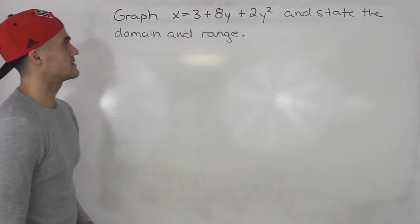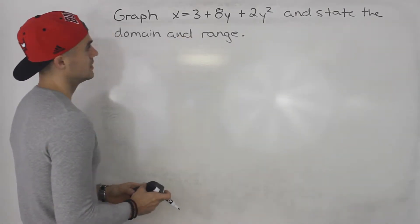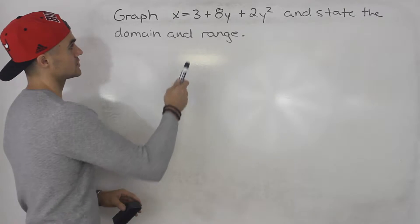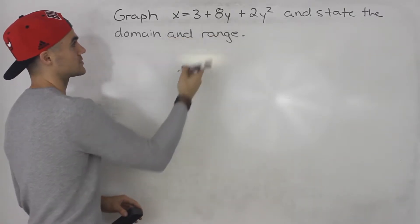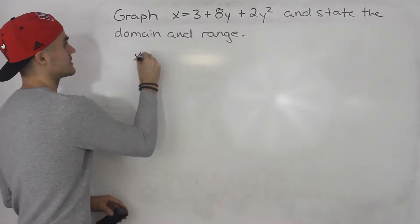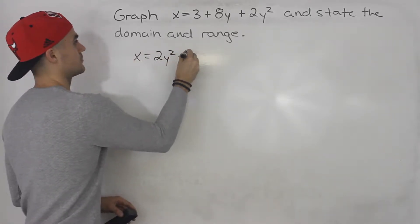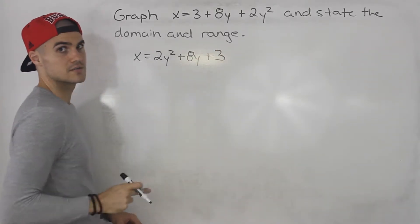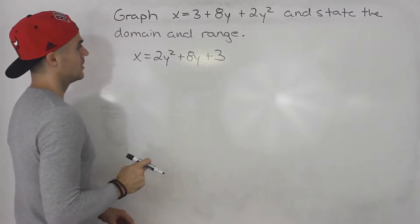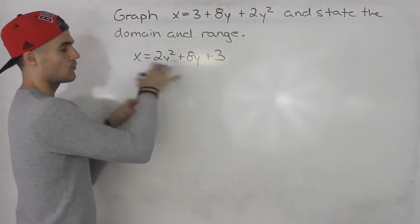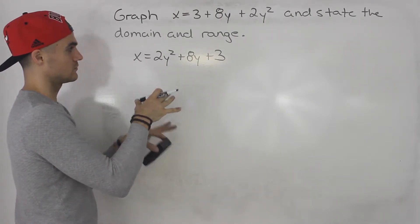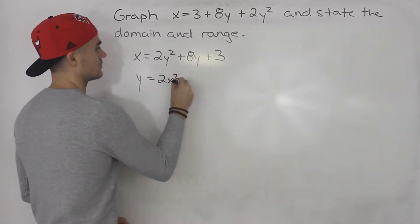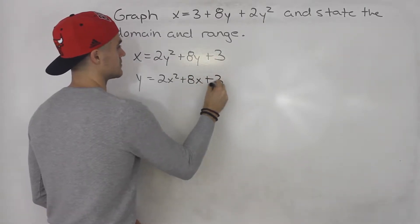Notice that this is a strange-looking relation, but it almost resembles a quadratic, only if the x and y's were interchanged. So we have x equals 3 plus 8y plus 2y squared, which we can rewrite as x equals 2y squared plus 8y plus 3. If we interchange the y's and the x in this relation, we would end up with y equals 2x squared plus 8x plus 3.